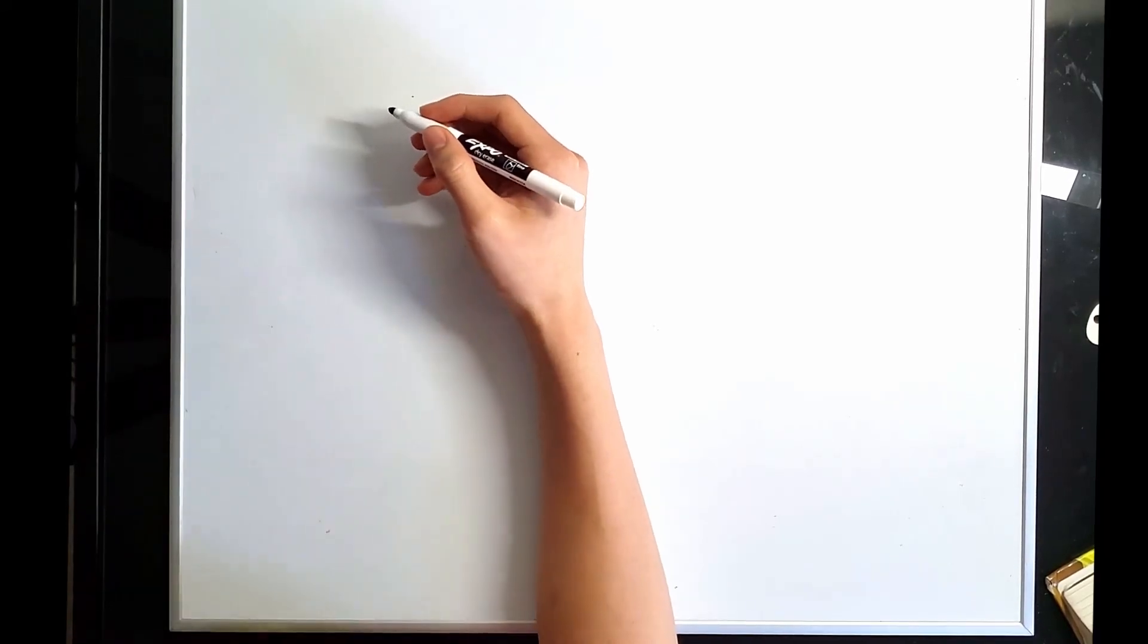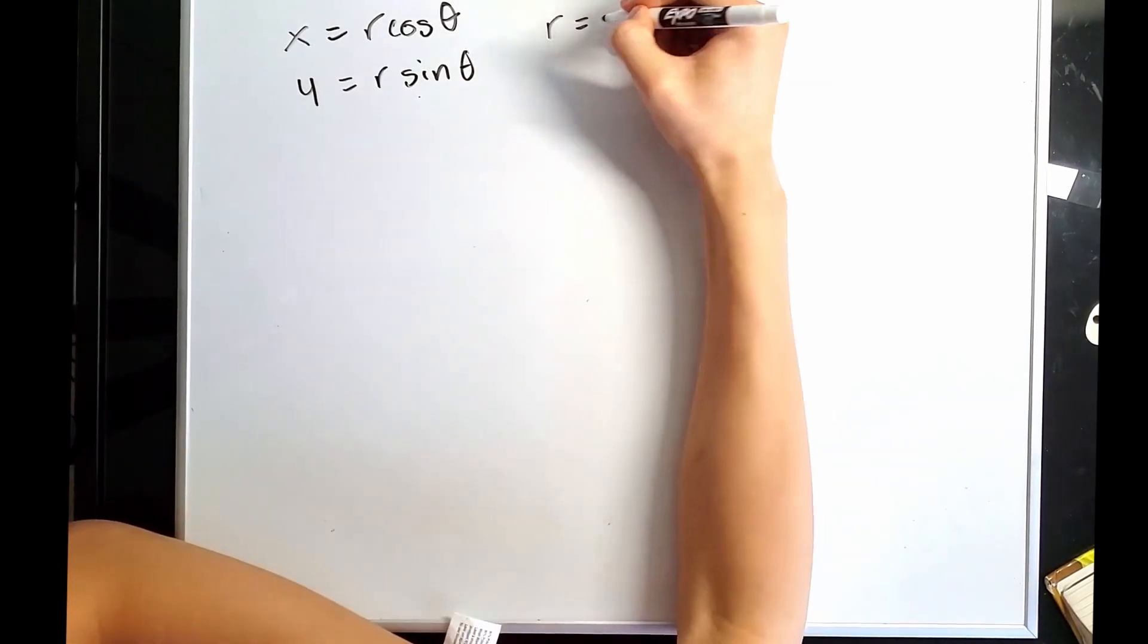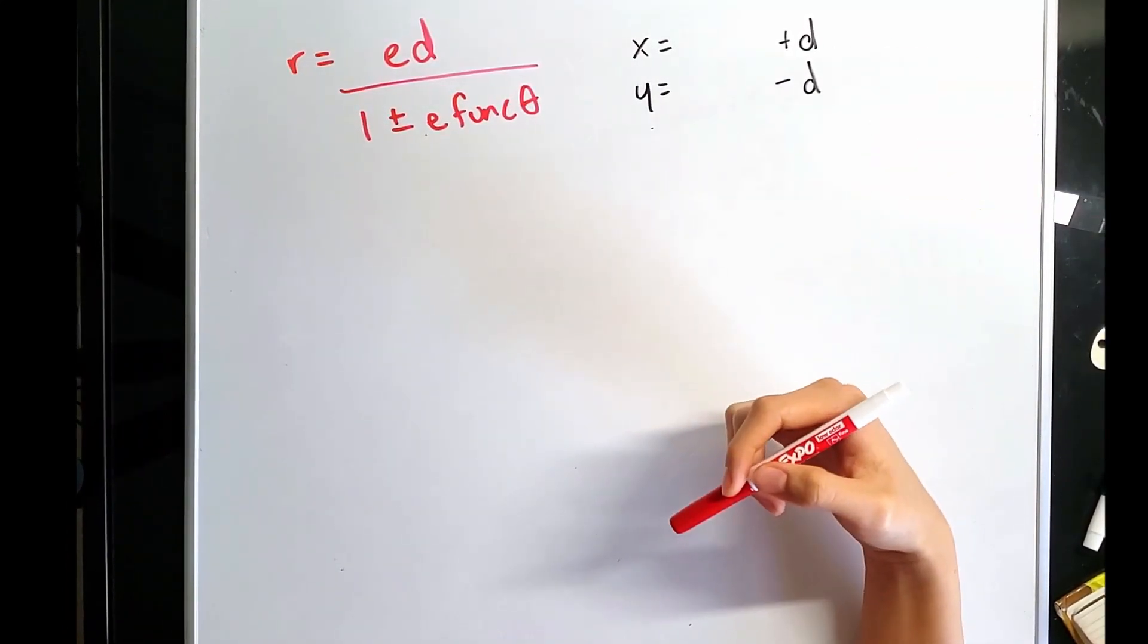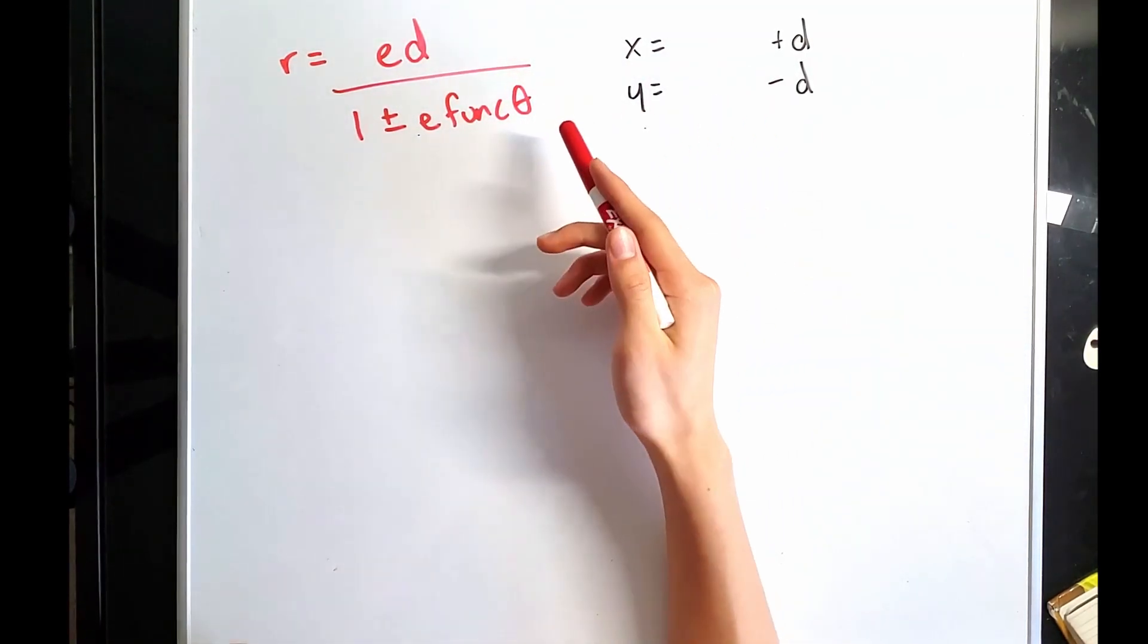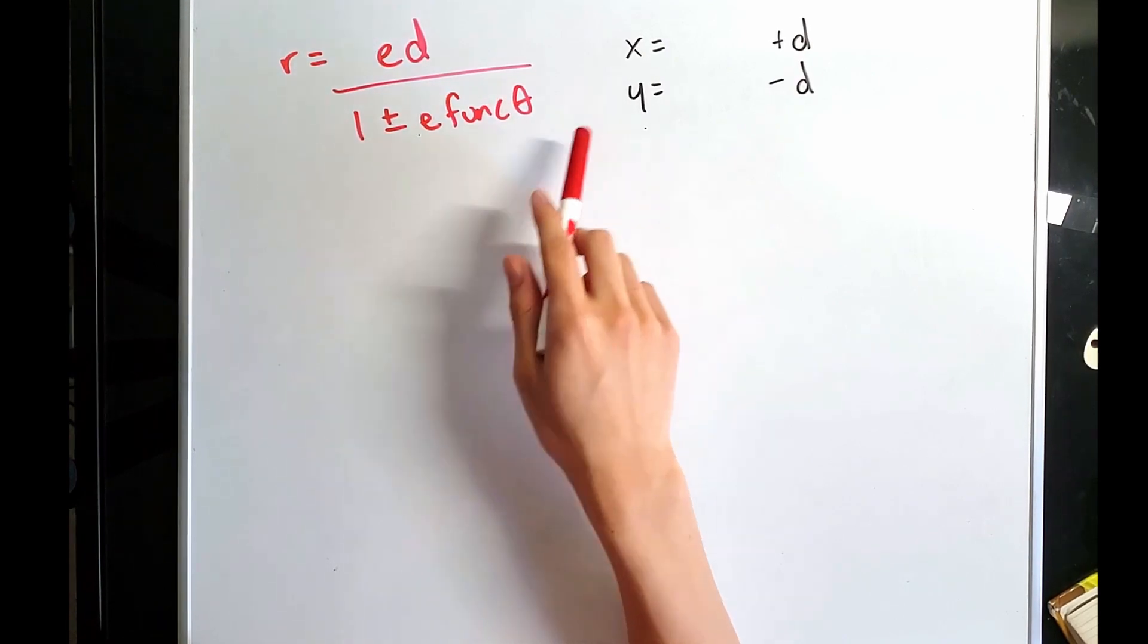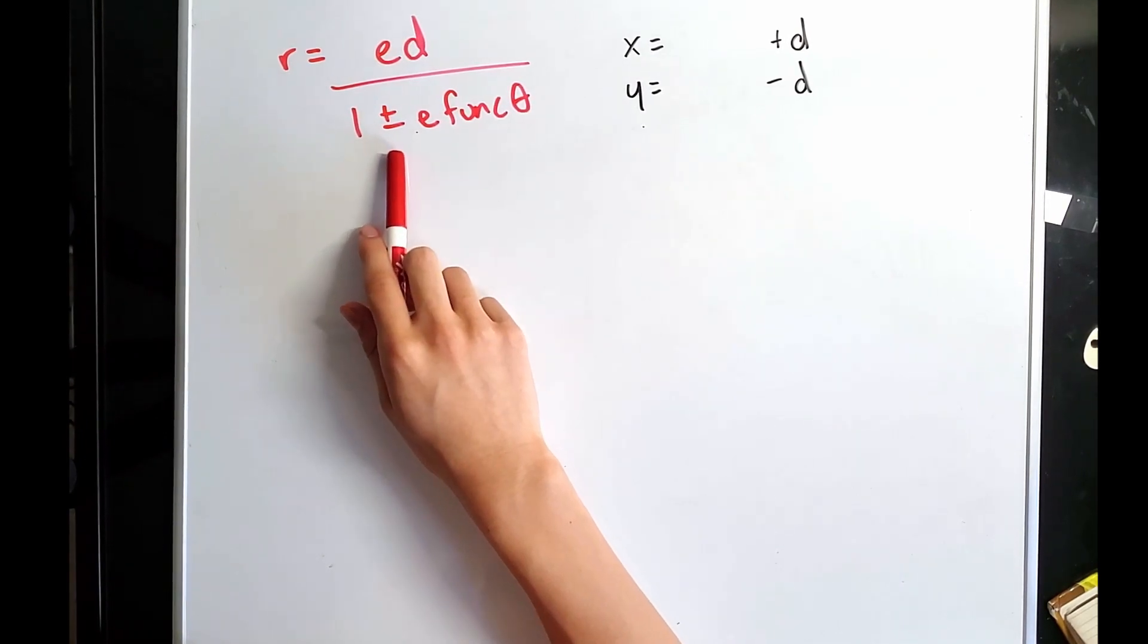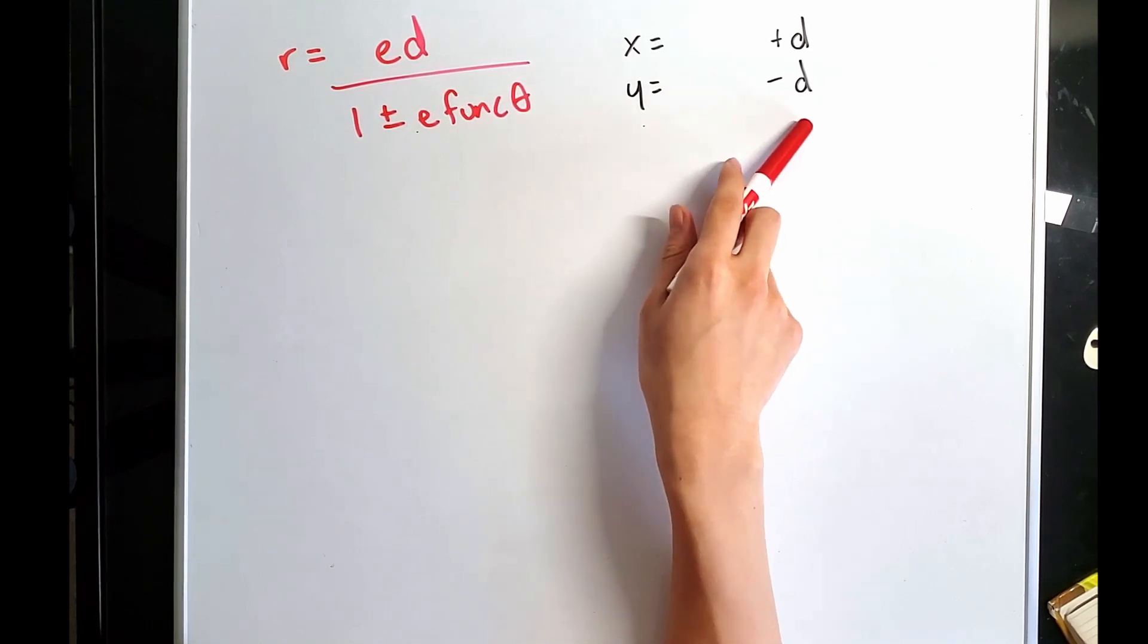For polar to rectangular form, there is a simple conversion that you can do. x is equal to r cosine theta. y is equal to r sine theta. r is equal to the square root of x squared plus y squared. Inverse tan of y over x is theta. So we can also find the general polar form for conic sections. Here we have e times d, eccentricity times d, which is the position of the directrix over one plus or minus e times function theta. Function is cosine whenever the directrix is x equals and sine when it is y equals. And then this plus or minus, it is plus when x equals positive number and minus when x equals or y equals a negative number.